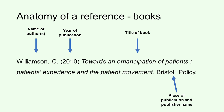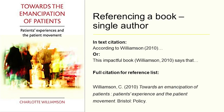Let's have a quick look at the anatomy of a reference using a book. Going from left to right, you have the name of the author, sometimes multiple authors, the year of publication, the title of the book — in Harvard it's in italics — and then the place of publication and publisher name. This particular example is the book 'Towards the Emancipation of Patience' by Charlotte Williamson, a single author. The reference makes sense in the context of what you're writing — you can refer to an author in the flow of the text and put the date in brackets, or you can just put both in brackets.